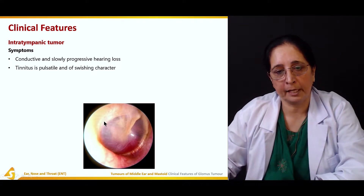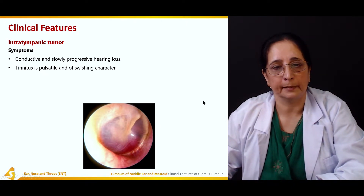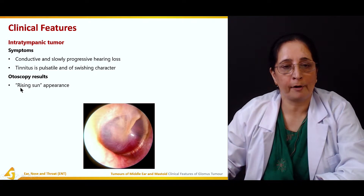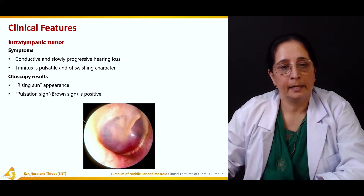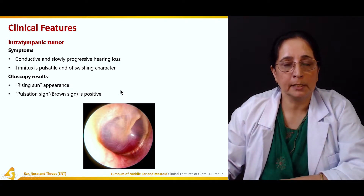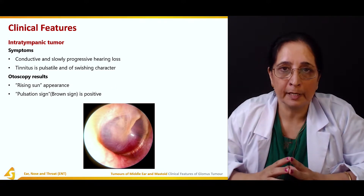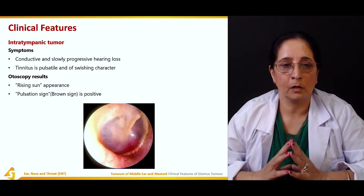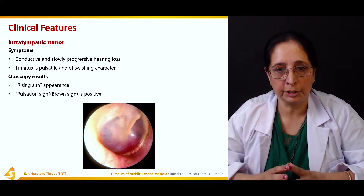This diagram shows the glomus tumor through otoscopy. On otoscopy, there is a rising sun appearance and a pulsation sign. Brown's sign is positive in this case. To summarize, intratympanic glomus tumor causes conductive hearing loss and pulsatile tinnitus of a swishing character.